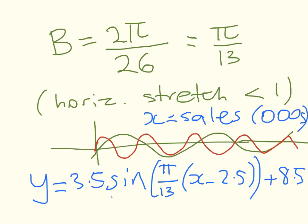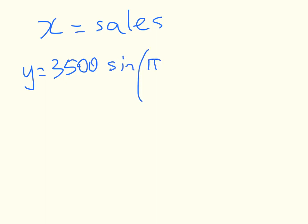I'm going to do the next slide showing you if you didn't do that what would be a correct version of the answer. If x is just sales in individual units, that equation would be y equals 3500 sin(π/13)(x minus 2500) plus 8500. So either of those are fine. Thanks for watching.